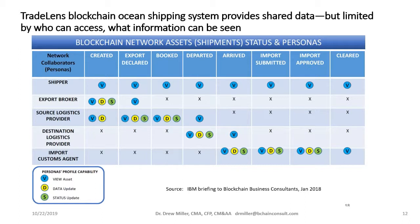Hyperledger Fabric operates by channels — you can think of them as sub-segments or separate blockchains all linked together — and with channels you can control what different parties can see. For example, an export broker can create a container blockchain, view the shipping data, and get automatic updates, but once the container is approved for export the broker can only view data — not change it — and once it's booked for shipping, the broker is no longer authorized to get any data at all.